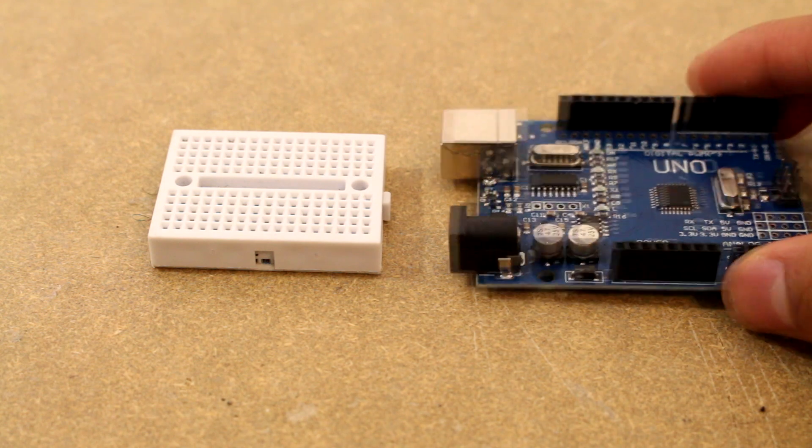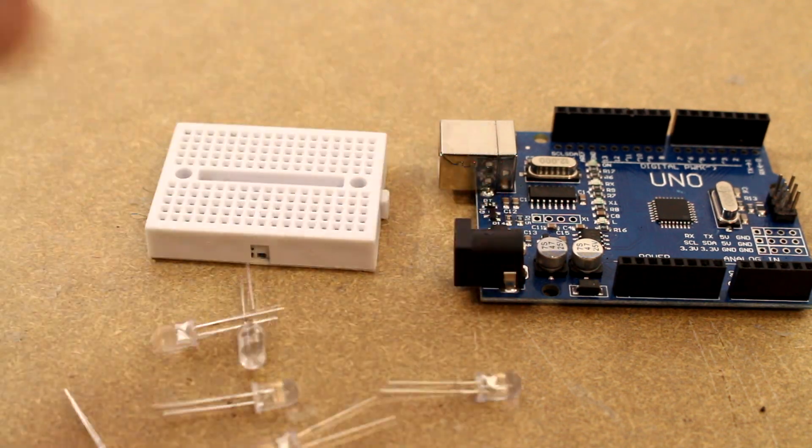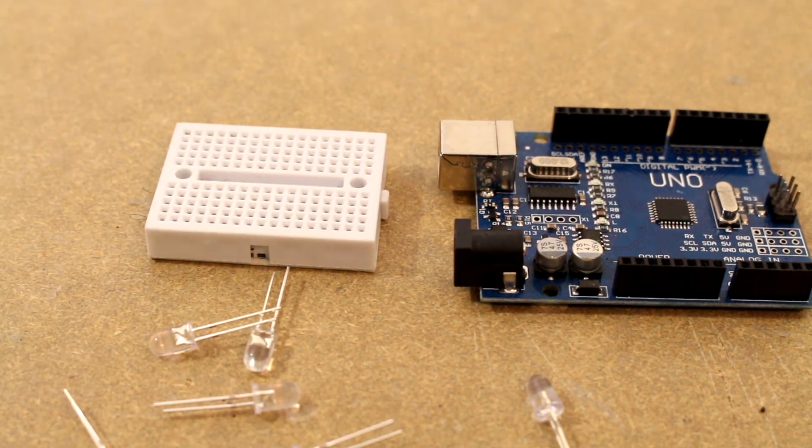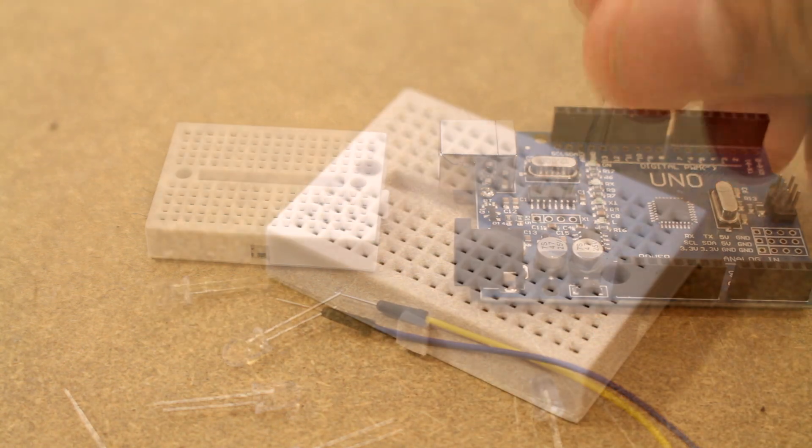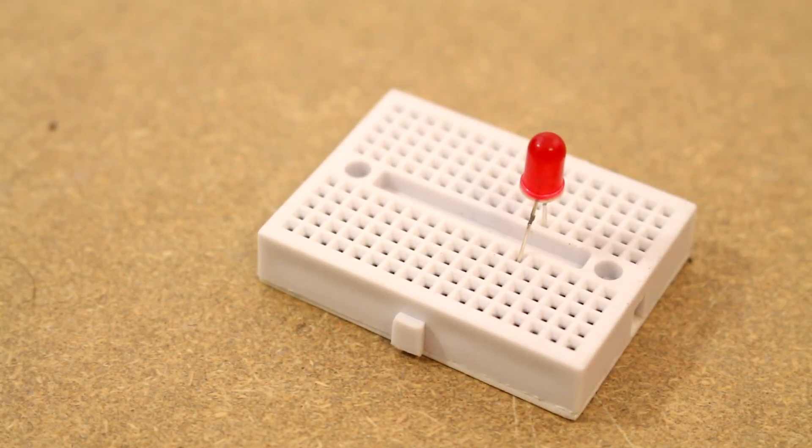Hey this is Josh from JoshBuilds and today we're going to be building a voltmeter slash battery tester. For this we're going to need an Arduino, a breadboard, some LEDs, some wires and some resistors.